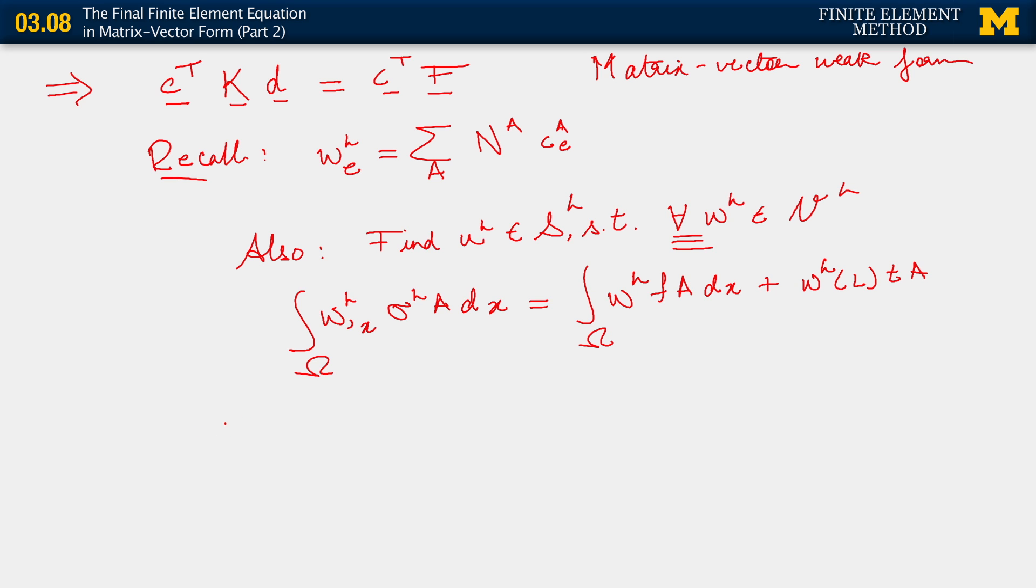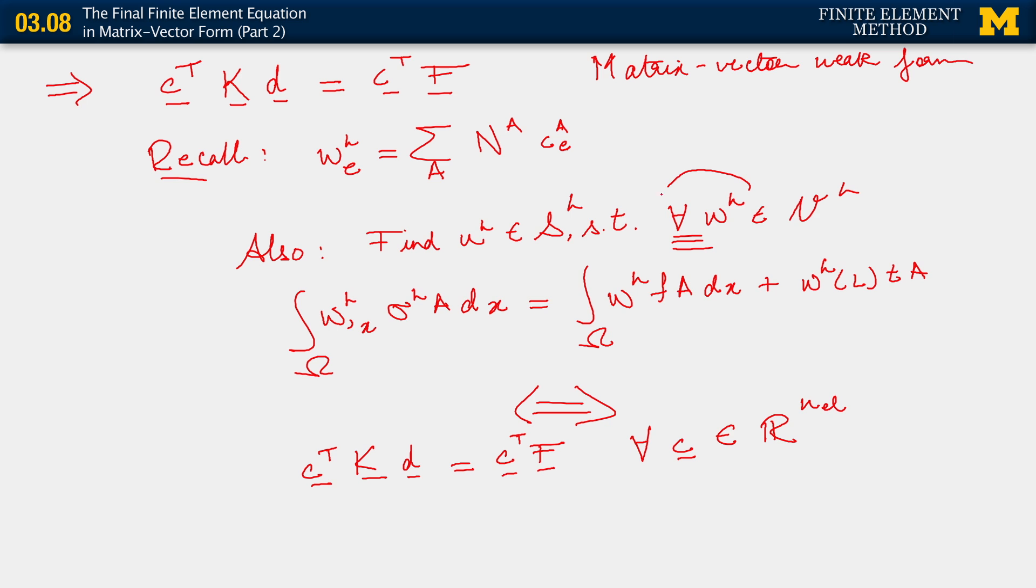Essentially, what represents w_h is the following. This equation of ours is completely equivalent to our statement at the top of the slide, C transpose K D equals C transpose F, when we realize that this has to hold for all C belonging to this R^NEL space. C, after all, is just a vector with NEL entries.